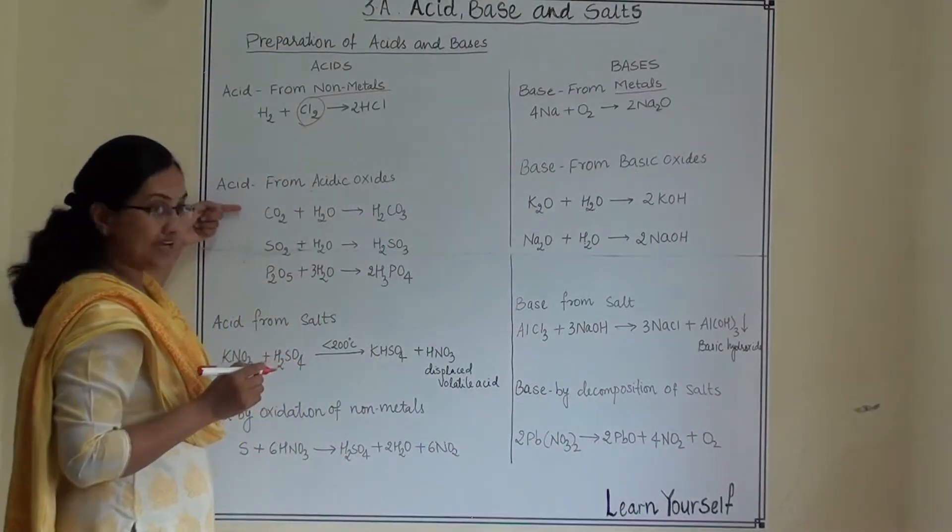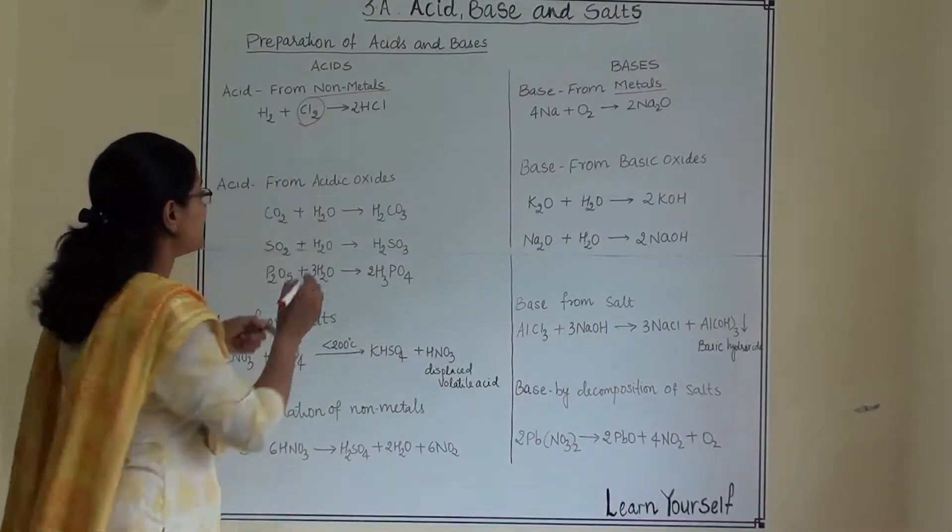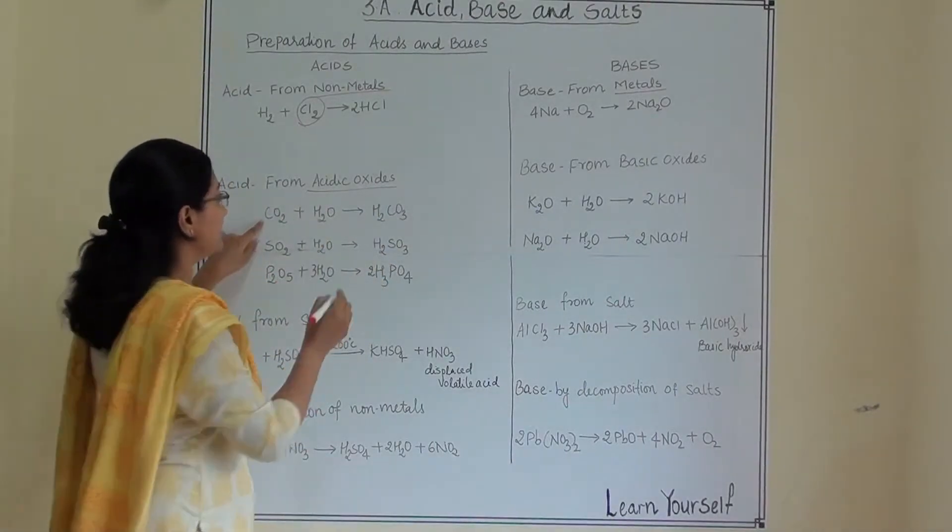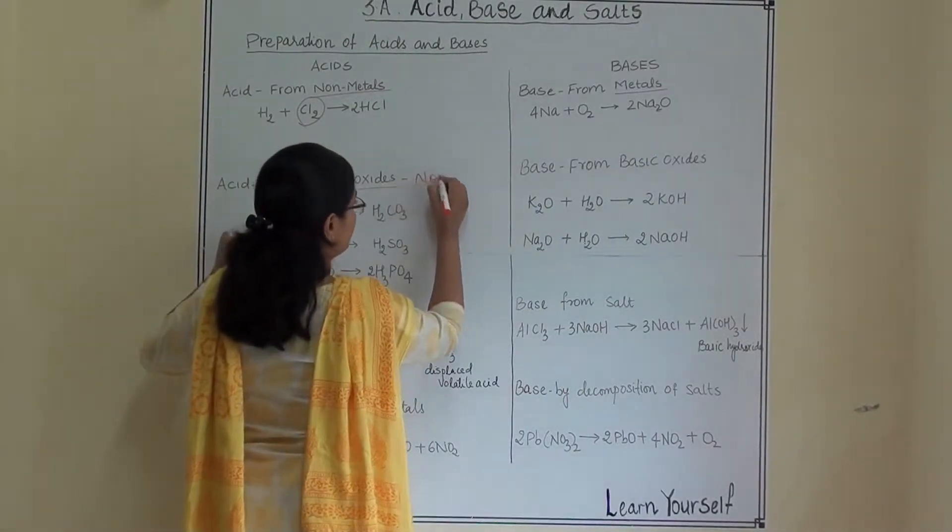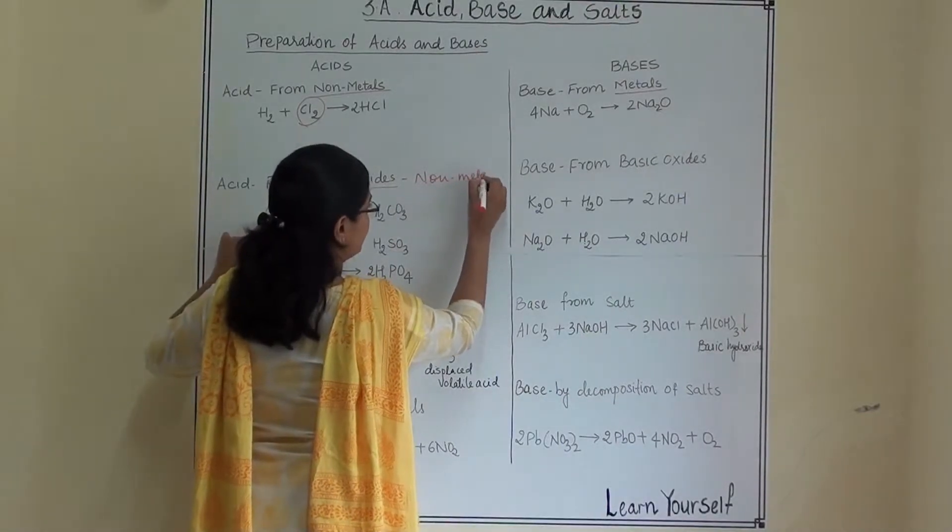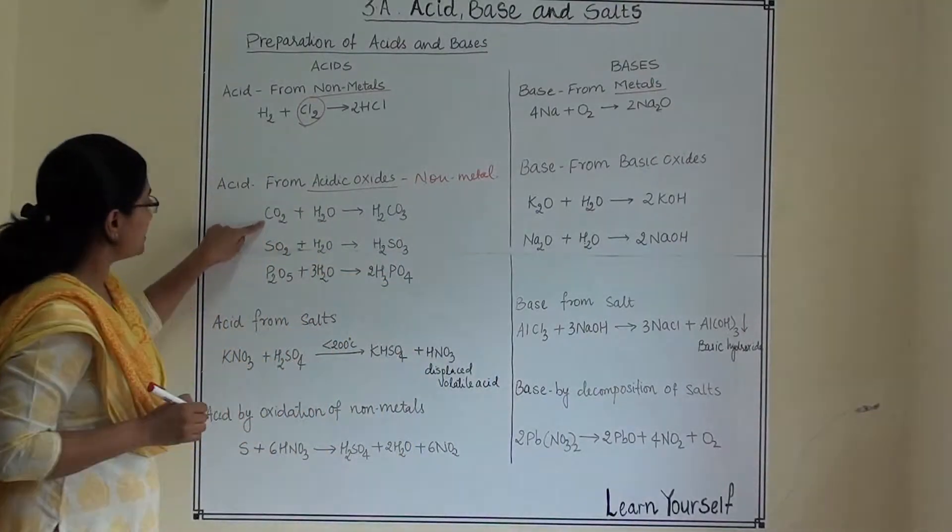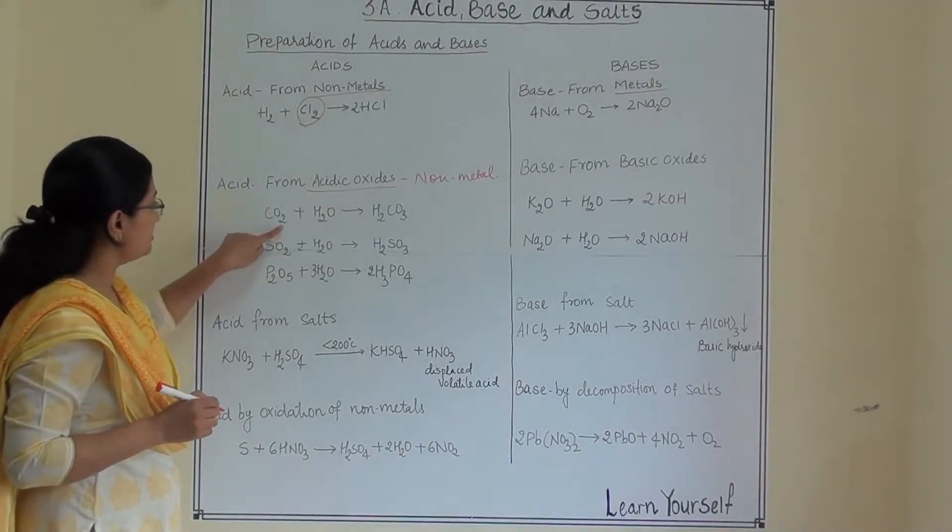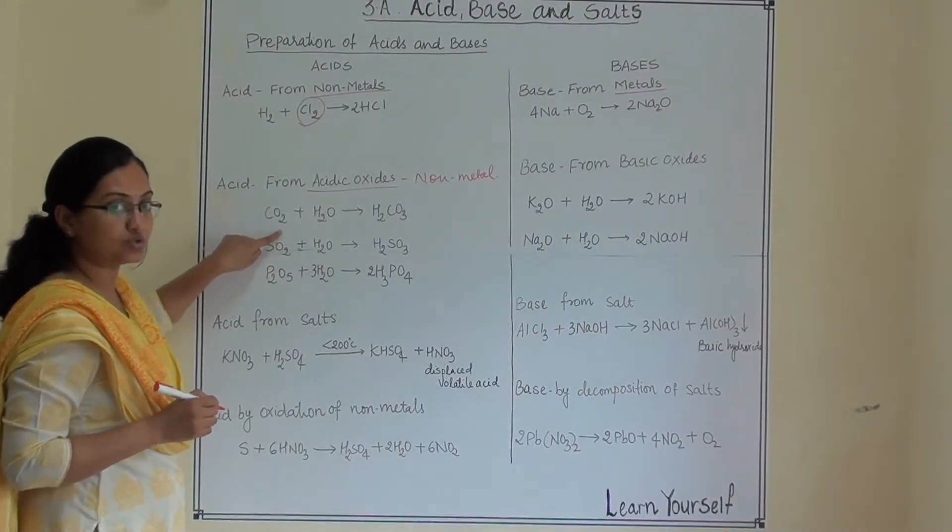The second type, acid from acidic oxide. Whenever the acidic oxide is there, they are from non-metal. For example carbon, sulphur and phosphorus. Carbon and oxide, carbon's oxide, carbon dioxide.